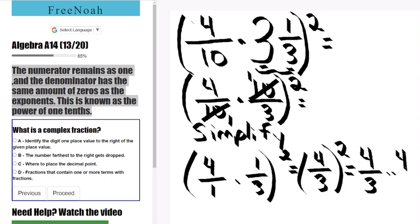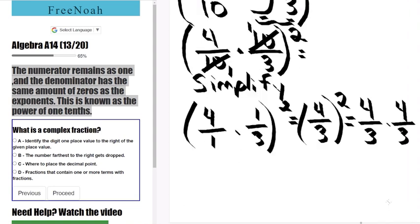That's going to redistribute as four over three times four over three. At this point, we just have to simply multiply, giving us a final solution of sixteen over nine.